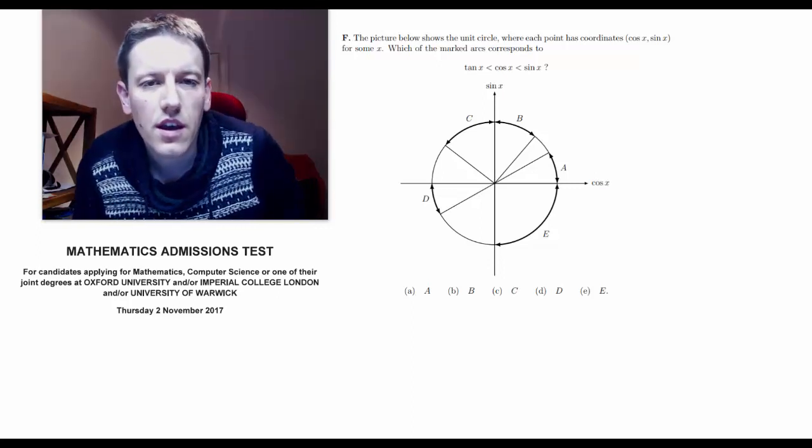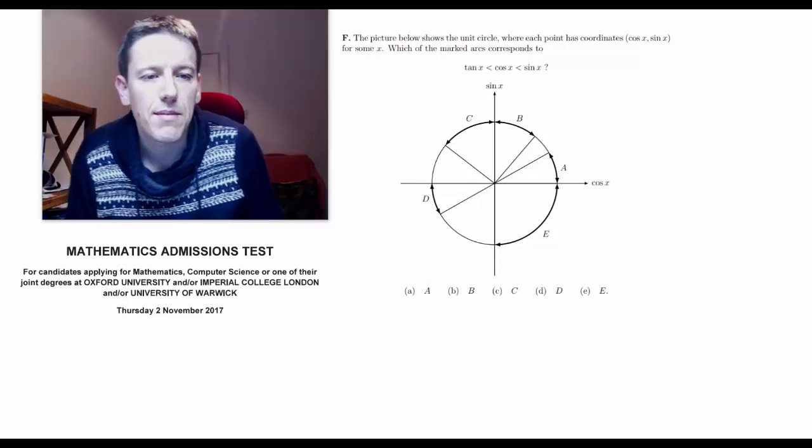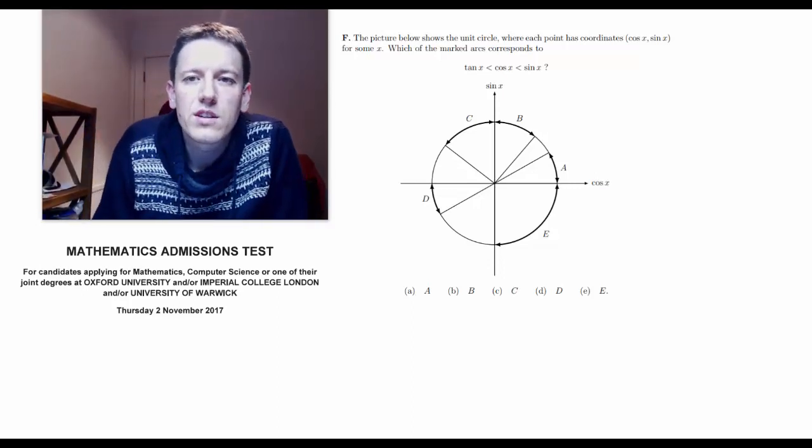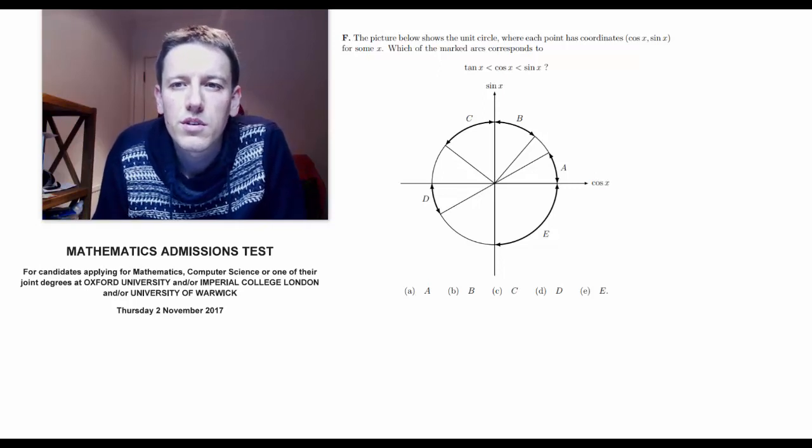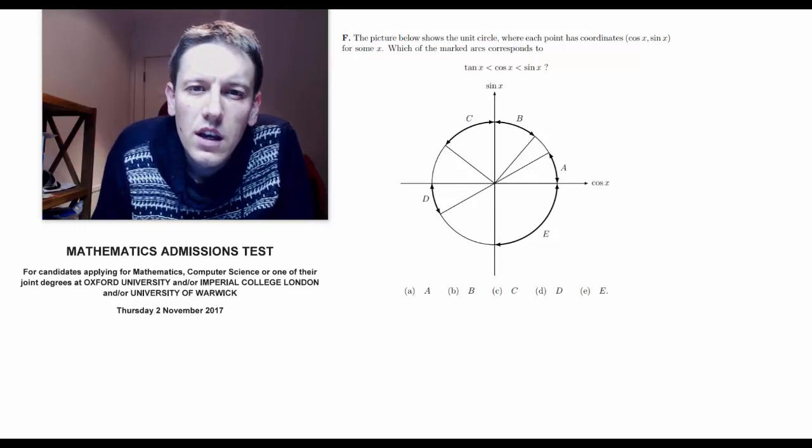Okay, here's question F from the short answer questions from the Oxford MAT from 2017. And we've got a picture of a unit circle, each point with coordinates cos x, sin x as we go around the unit circle, for some x.